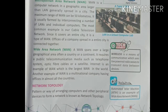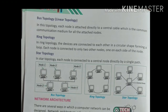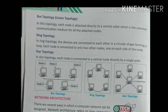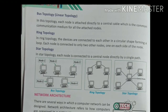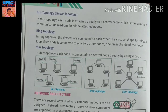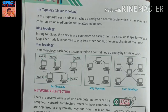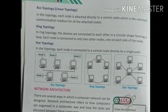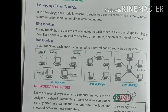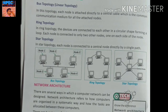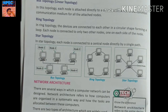The first topology is Bus Topology, also called Linear Topology. In this topology, each node is attached directly to a central cable, which is the common communication medium for all attached nodes. All nodes are directly connected to the central cable through which communication happens. As shown in the figure, five nodes (computers) are connected linearly to one cable — just like the windows of a bus.